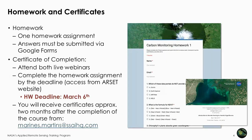We will have one homework assignment available after the second session next week. The homework will be submitted via Google Forms, and the links will be listed on the course website. To receive credit for homework, you must submit all answers by March 6th. To receive a certificate of completion, you must attend both live webinars and complete the homework assignment. It takes some time to process these certificates, so you can expect to receive them about two months after the completion of the course.